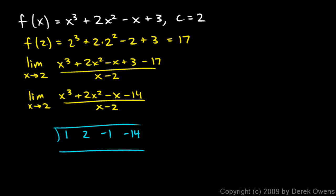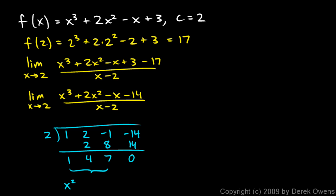We put 2 in the synthetic division box and bring down 1. Then: 1 times 2 is 2, add to get 4; 4 times 2 is 8, add to get 7; 7 times 2 is 14, giving remainder 0. The other factor has coefficients x squared plus 4x plus 7.